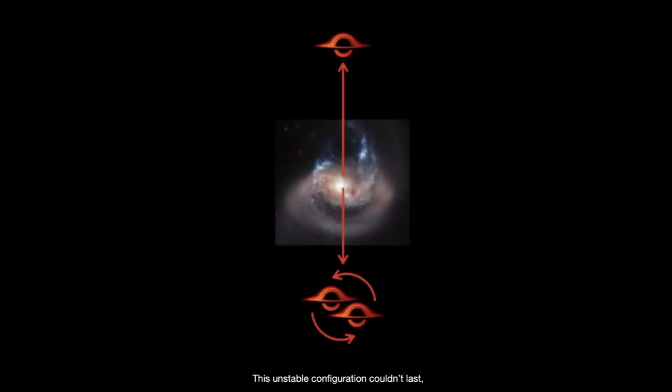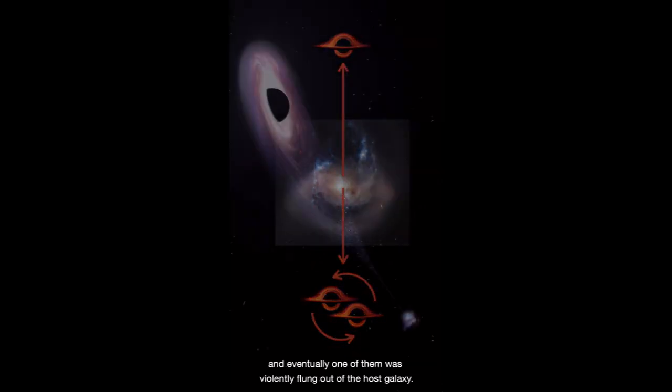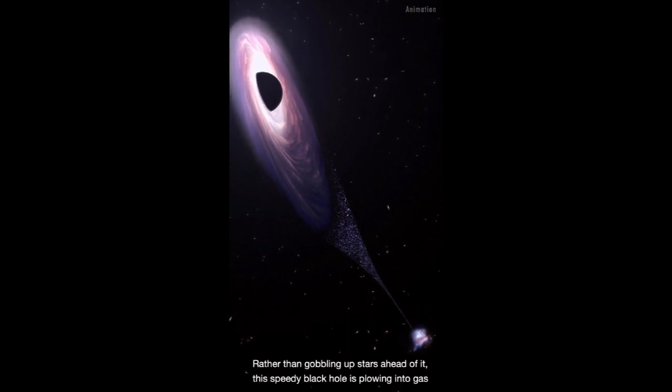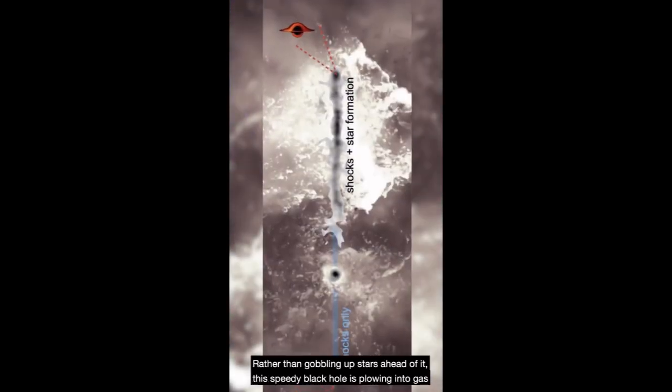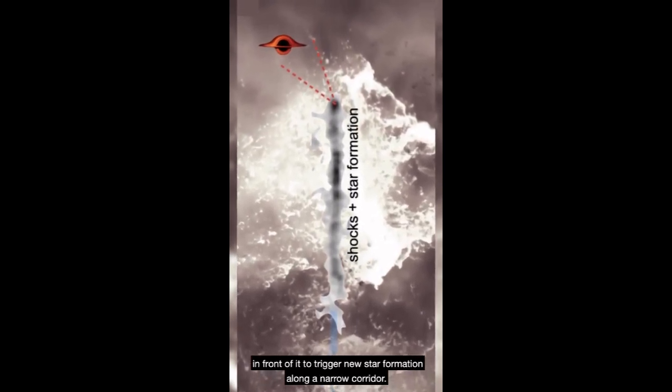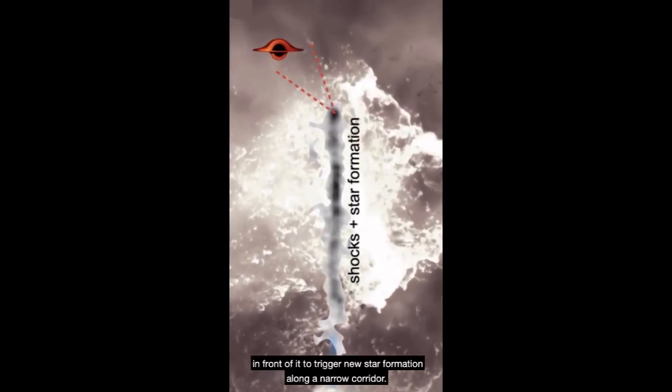This unstable configuration couldn't last, and eventually one of them was violently flung out of the host galaxy. Rather than gobbling up stars ahead of it, this speedy black hole is plowing into gas in front of it to trigger new star formation along a narrow corridor.